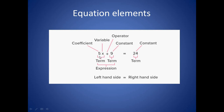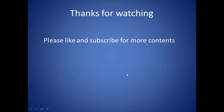In this equation: this is a coefficient, this is a term, this is an operator and this is a constant. These two terms form an expression. A single term can also be an expression. So these two expressions separated by an equal operator form an equation — this is the left-hand side expression and this is the right-hand side expression. Thanks for watching guys, please like and subscribe for more content.